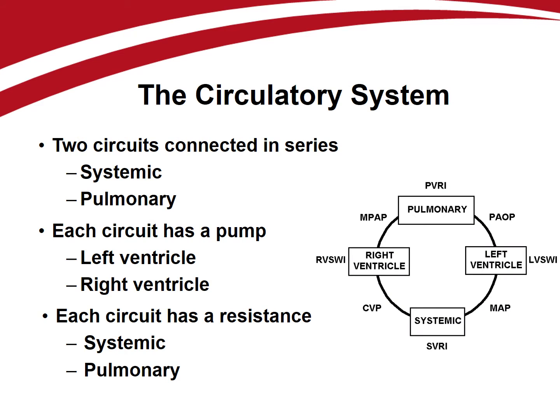The circulatory system is basically two circuits connected in series. Each circuit has a pump — either the left ventricle or right ventricle — and a resistance, either the systemic circulation or the pulmonary circulation.